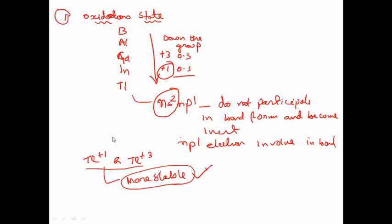In oxidation state, if you move from top to bottom in the periodic table for group 13 elements, on going down the group the +1 oxidation state becomes most stable as compared to +3 oxidation state. Almost all group 13 elements have an ns2 np1 configuration. The ns2 electrons do not participate in bond formation and remain inert — this is the inert pair effect. Only the np1 electron is involved in bonding, so +1 is the most stable oxidation state for heavier elements like thallium.